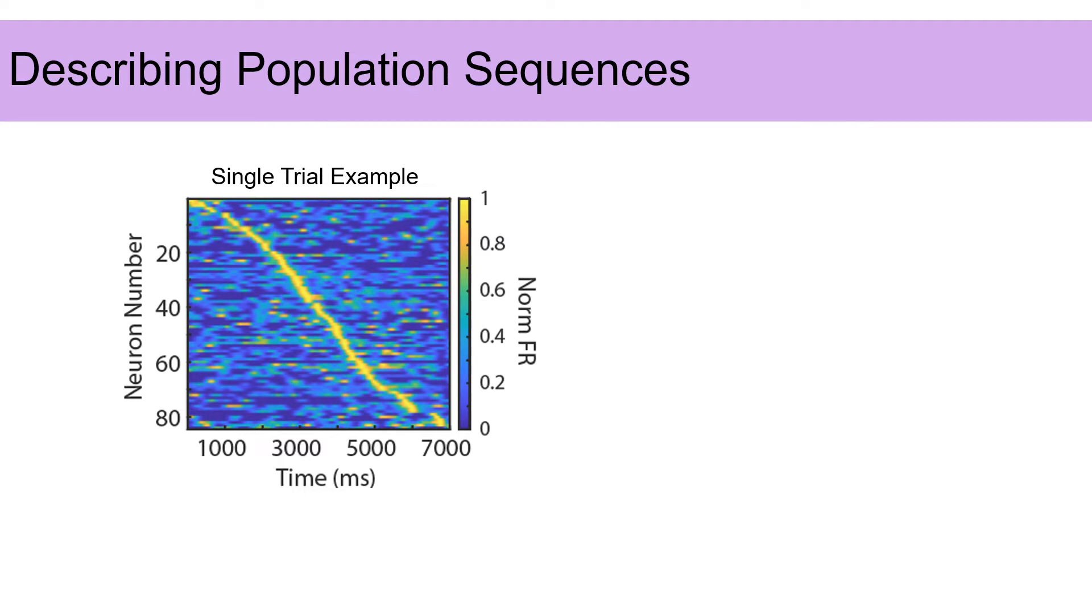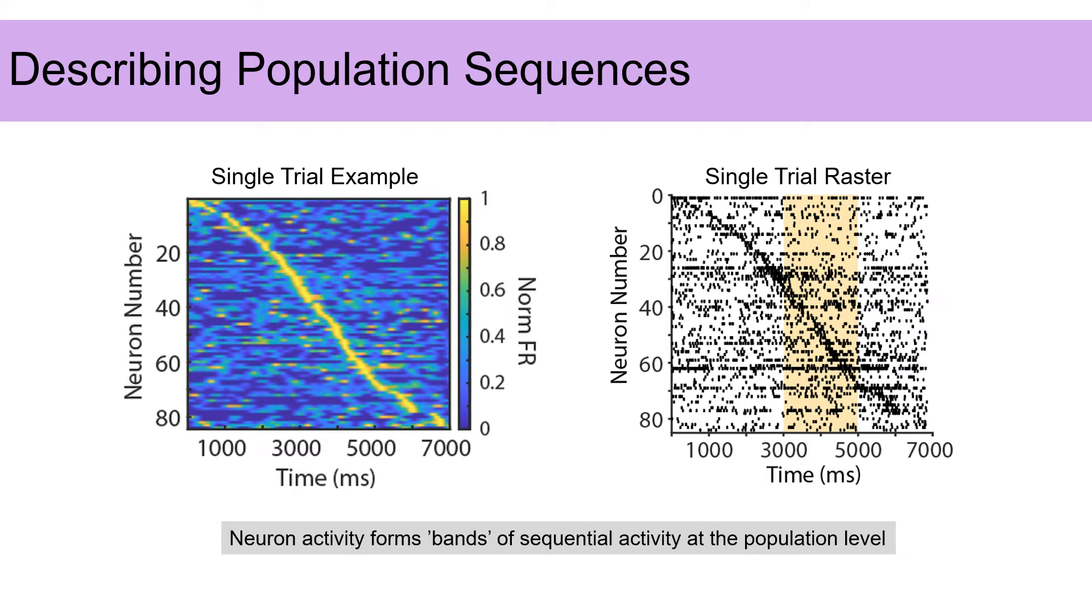So after determining that single neurons have precise temporal activity, which is related to behavior, we started looking for evidence of sequences in the neural data. When ordered by peak firing time, sharp bursts of activity formed clear bands spanning the duration of the trial. We can see this pattern clearly looking at the population raster for a single trial.